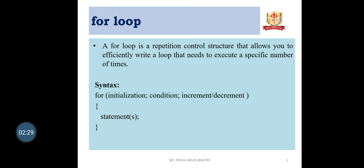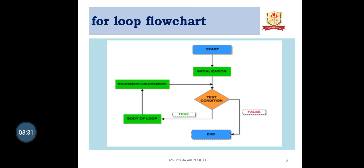For Loop: A for loop is a repetition control structure that allows you to efficiently write a loop that needs to execute a specific number of times. The syntax is: for(initialization; condition; increment/decrement) { statement; }. Initialization means we declare which type of variable we are going to use. After variable initialization, we give the condition on which the block will execute, and we use either increment or decrement.